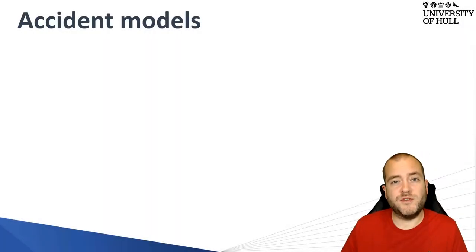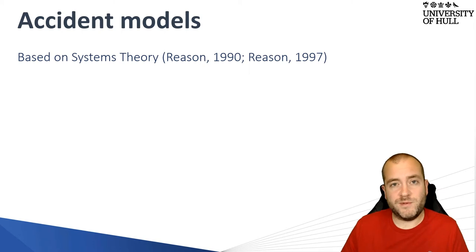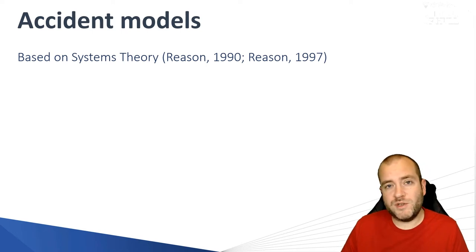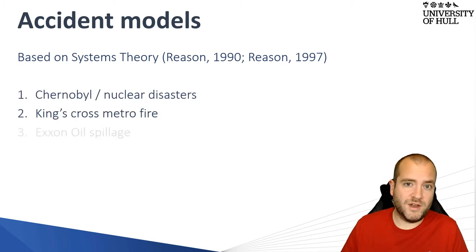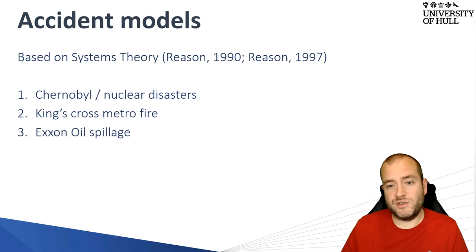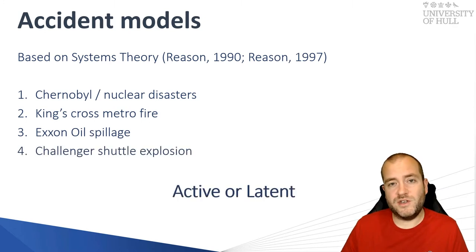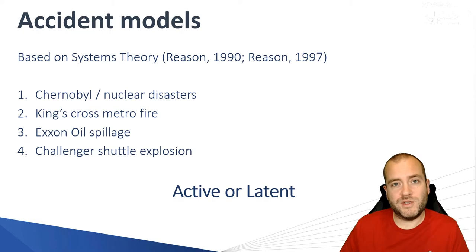Accident models have actually been around for some time, and they're based on the systems theory we've just talked about. Errors can occur in the social context, but also in the technical system and processes leading to the overall function of the system. They came about when investigators started to examine things like the Chernobyl disaster, the King's Cross Metro fire, the Exxon oil spillage, and the Challenger shuttle explosion. In each of these investigations, they found something called active errors and latent errors.